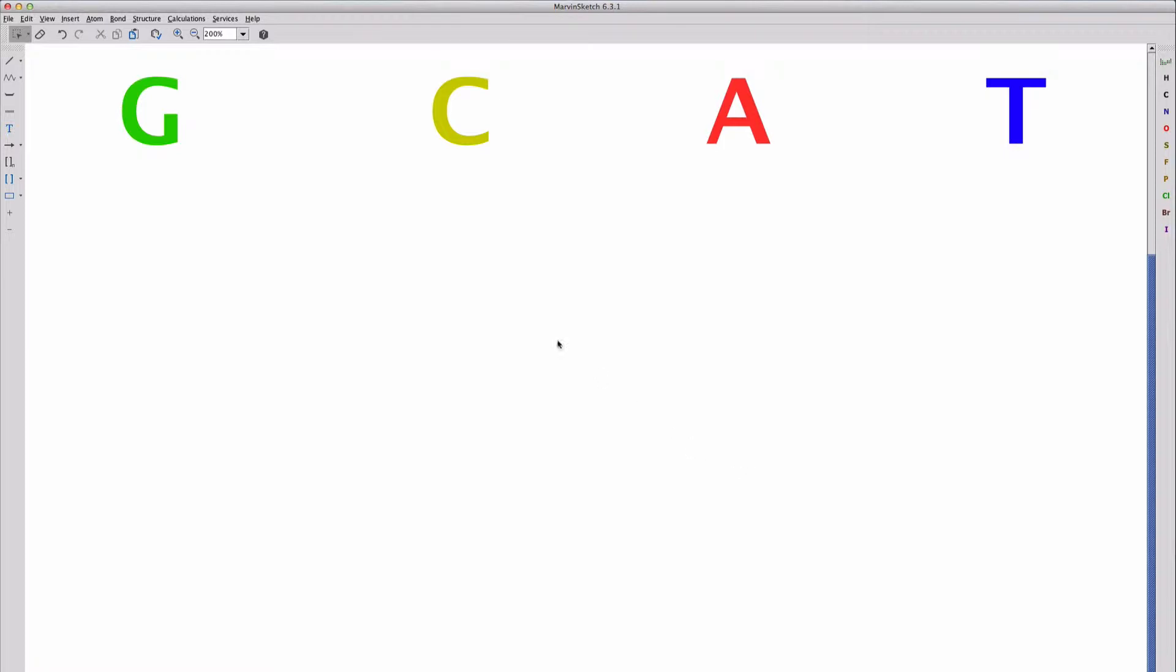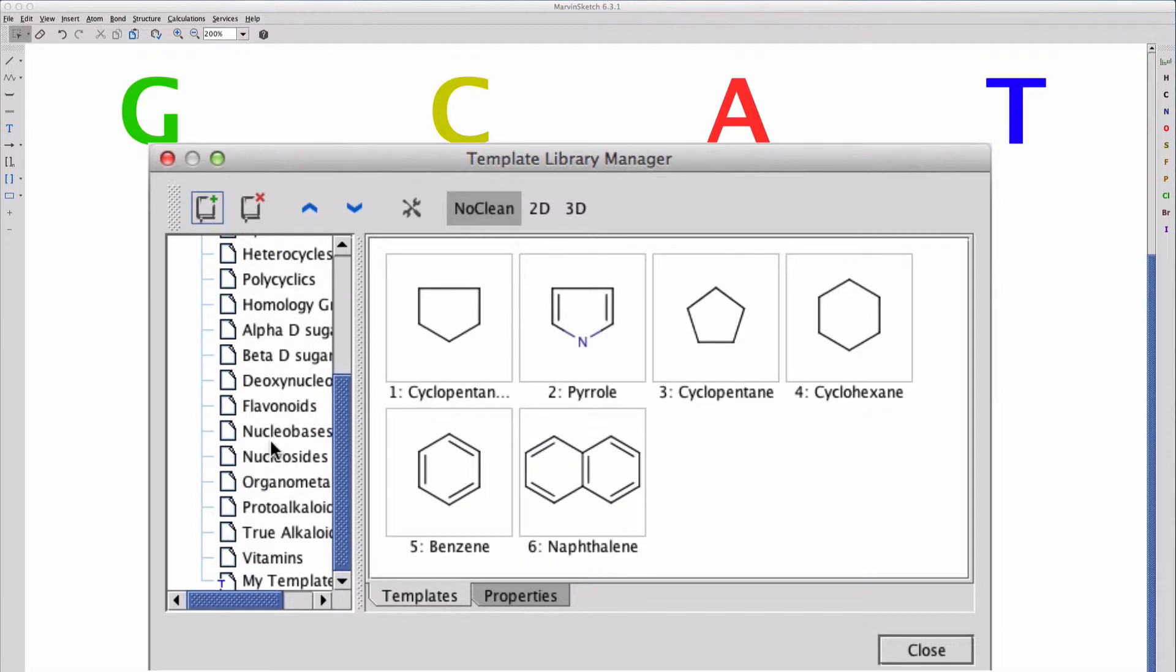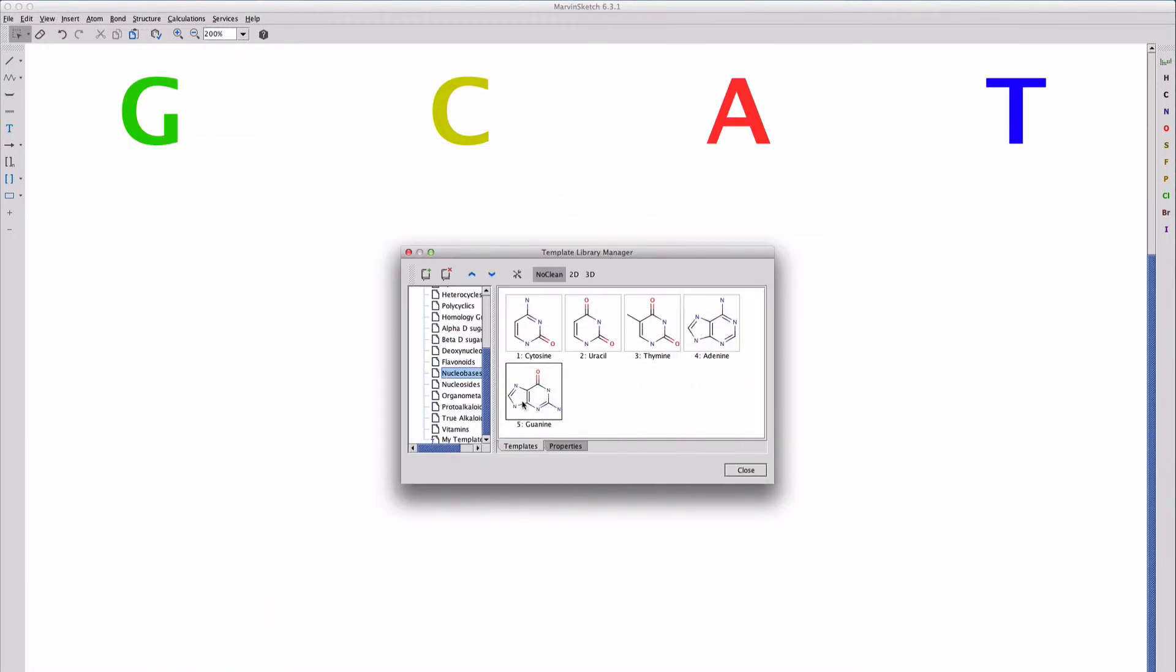Let's begin with a template. You'll find the template under the Insert menu, and scroll down until you come to nucleobases. There they are. Let's begin by adding the corresponding nucleobases to the letters at the top.